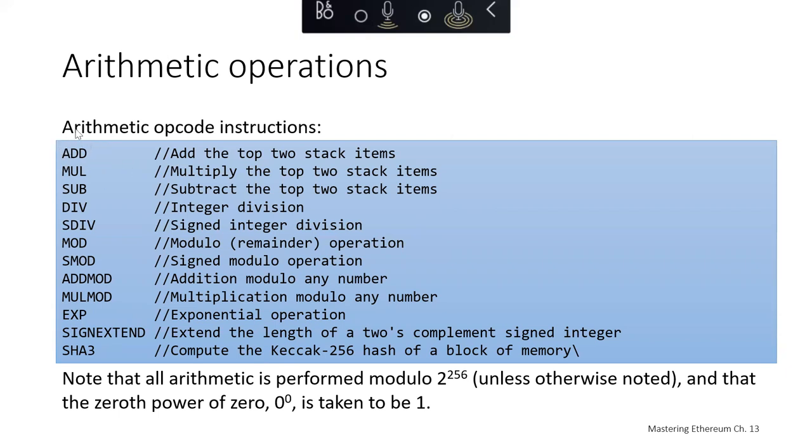Your most basic operators: ADD adds the top two items on the stack and puts the result on the stack. MUL multiplies the top two stack items with the result on the stack. SUB subtracts the top two stack items and puts the difference on the stack. Notice that all this arithmetic is performed modulo 2^256, and the zeroth power of 0, 0^0, is assumed to be 1.